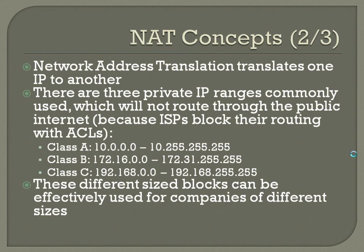Network address translation translates one IP to another. There are three private IP ranges commonly used which will not route through the public internet — not because they can't route, but because ISPs block their routing with ACLs since they know these ranges are reused. Class A is 10.0.0.0 through 10.255.255.255. Class B is 172.16.0.0 through 172.31.255.255. Class C is 192.168.0.0 through 192.168.255.255. These different size blocks can be used for companies of different sizes, and you can always break them down into smaller subnets as needed.